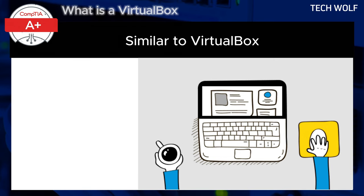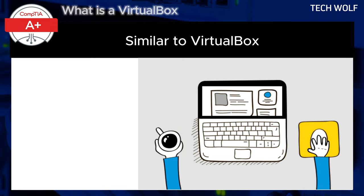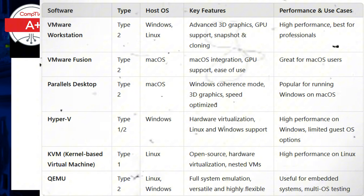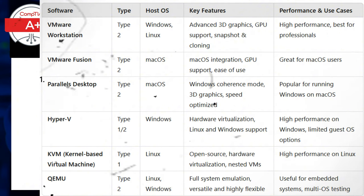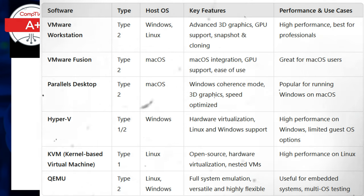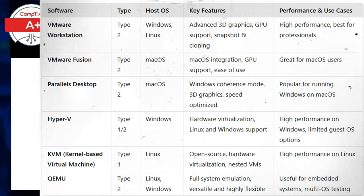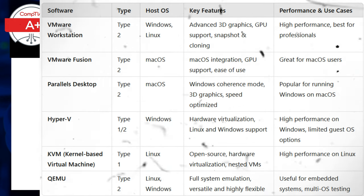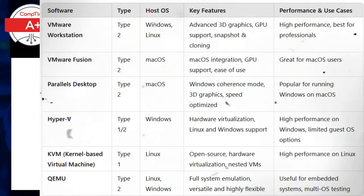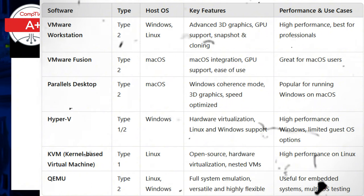There are several other prominent virtualization tools offering similar functionality, each with unique strengths. VMware Workstation and Fusion offer high performance, excellent support for 3D acceleration, and powerful features for developers and enterprise users. VMware Workstation is primarily for Windows and Linux, while VMware Fusion is designed for macOS.